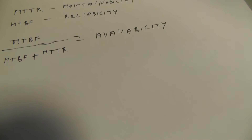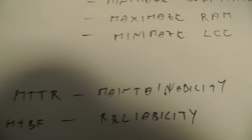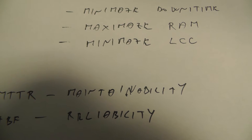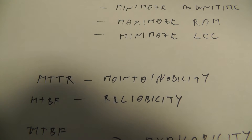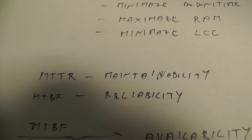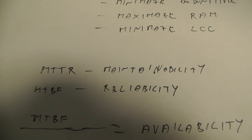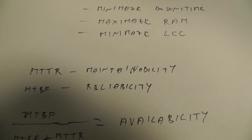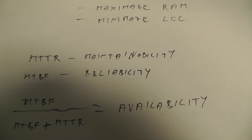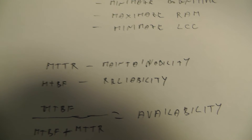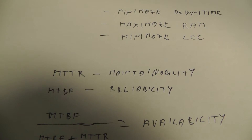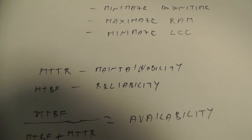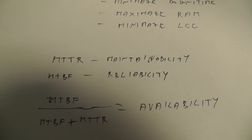Now some theory. What is maintainability? Maintainability is typically expressed as the mean time needed to return failed or shut-down equipment back to normal service. Influencing factors are working conditions, organization of work, procedures, skills, and resources.